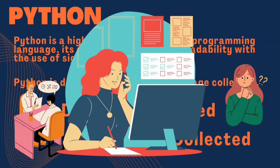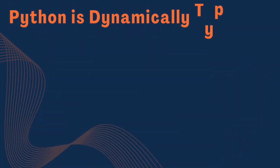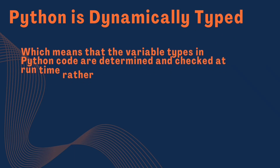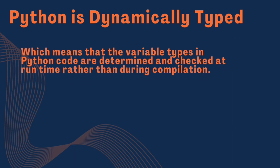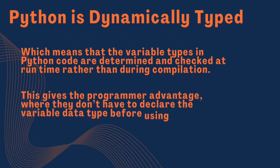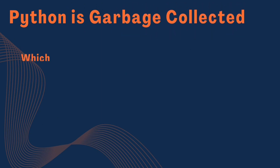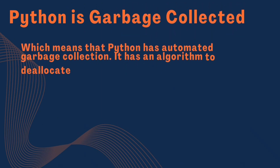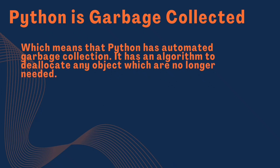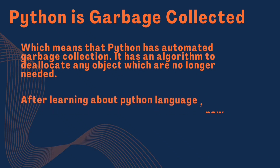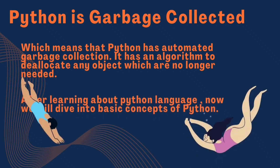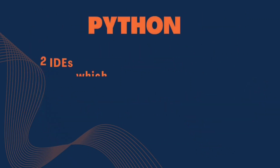Python is dynamically typed, which means that the variable types in Python code are determined and checked at runtime rather than during compilation. This gives the programmer the advantage of not having to declare the variable data type before using it. Python is also garbage collected, meaning it has automated garbage collection with an algorithm to deallocate any objects that are no longer needed.